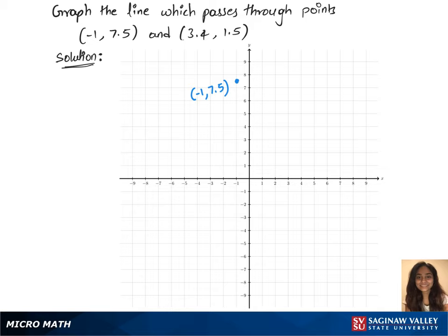The next point is 3.4 and 1.5 — mark that. And let's join those two points now. This will be our line for these two points.